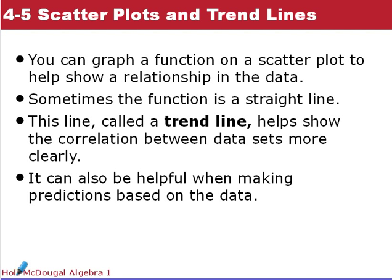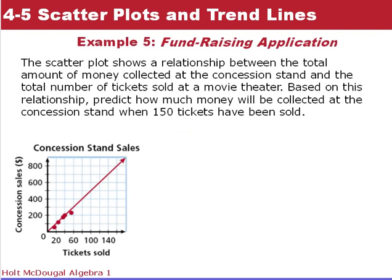To summarize: you can graph a function on a scatter plot to help show relationships in the data. Sometimes a function is a straight line — we can also call that a trend line. It helps show the correlation between the data sets more clearly and is also helpful when making predictions based on your data. So we're going to do some trend lines now.